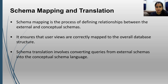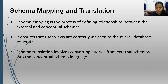Schema mapping is the process of defining relationships between the external and conceptual schemas. It ensures that user views are correctly mapped to the overall database structure. Schema translation involves converting queries from external schemas into the conceptual schema language.